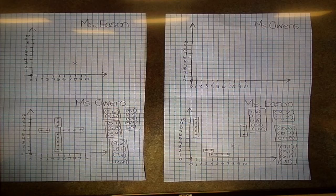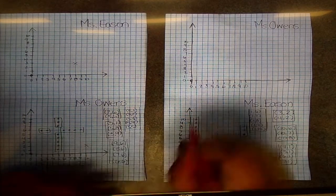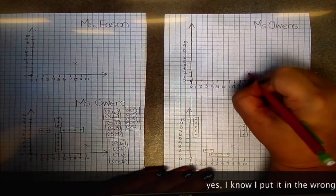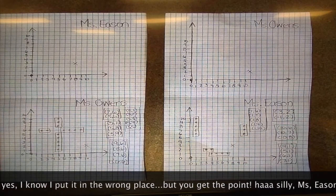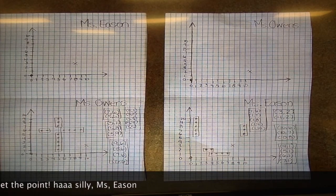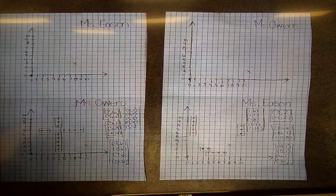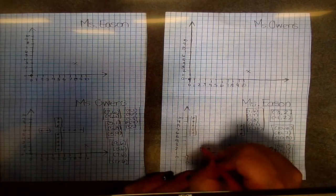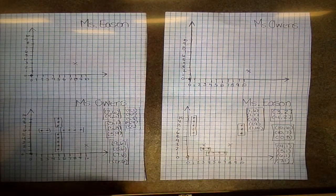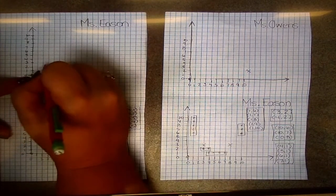So I'm going to choose the ordered pair 10-2. Miss Owens would look at her chart and make an X on 10-2, and I would make an X on mine once she told me that that was a miss. You and your partner will continue calling out ordered pairs back and forth until someone hits one of your boats.